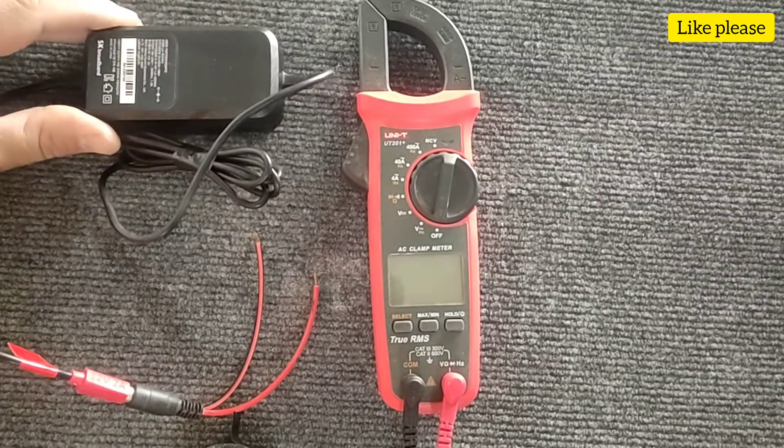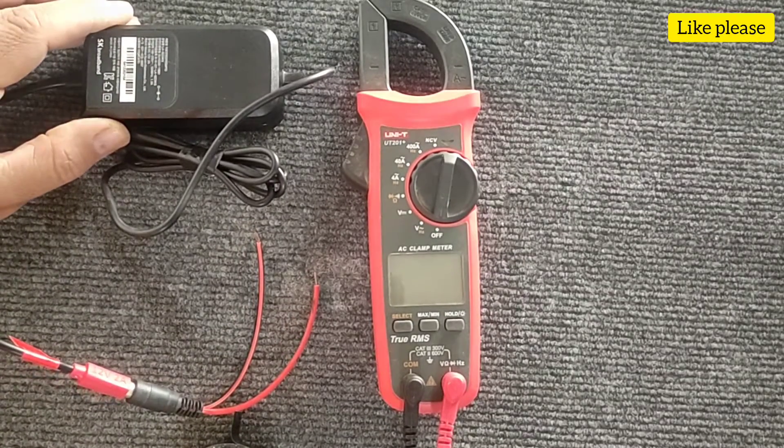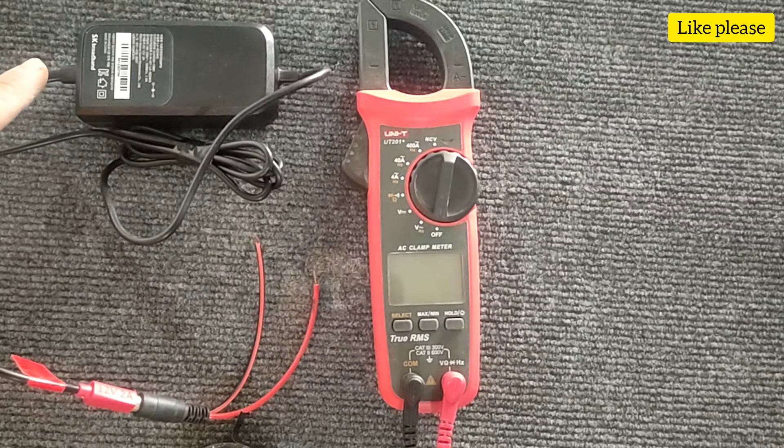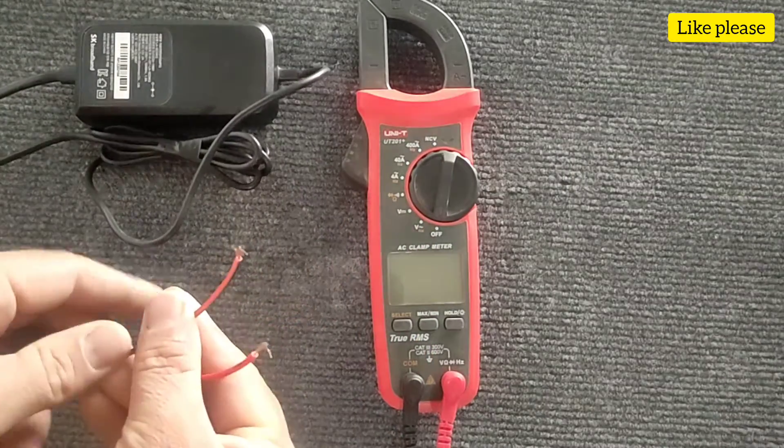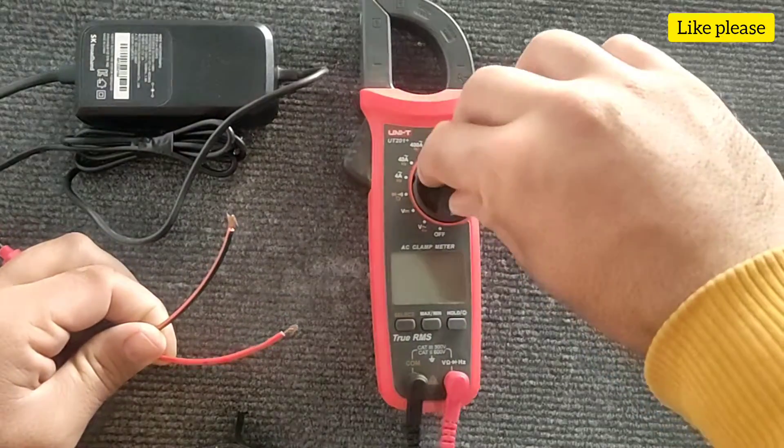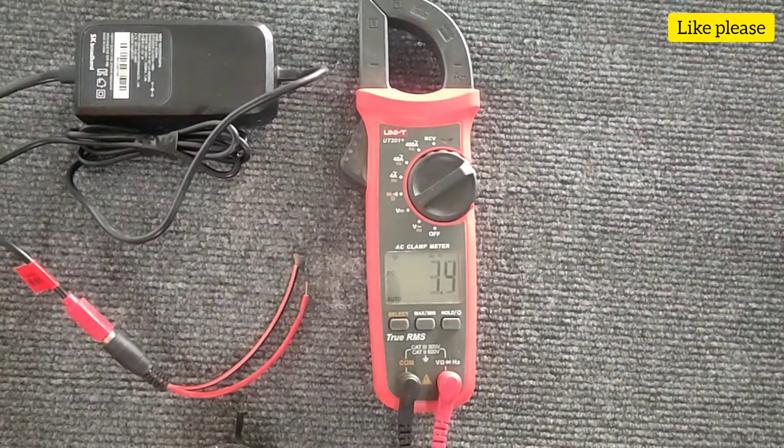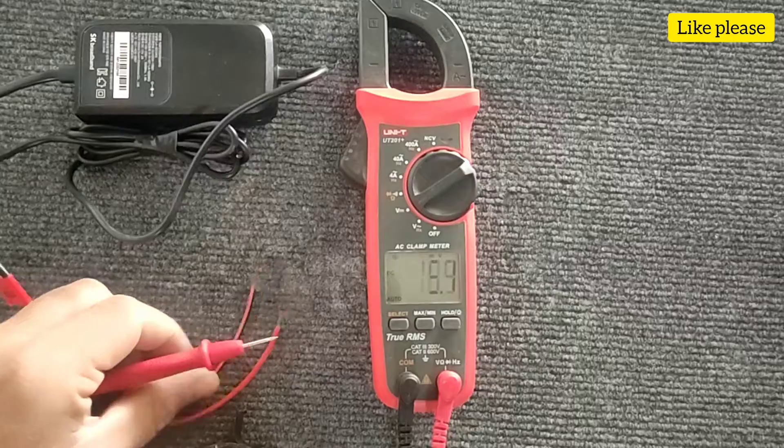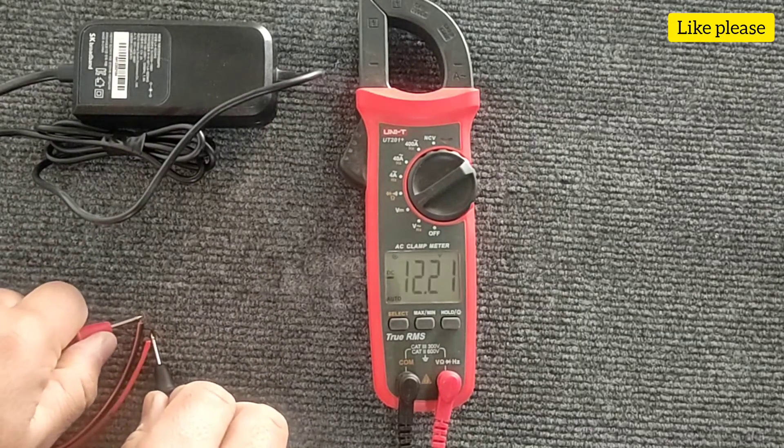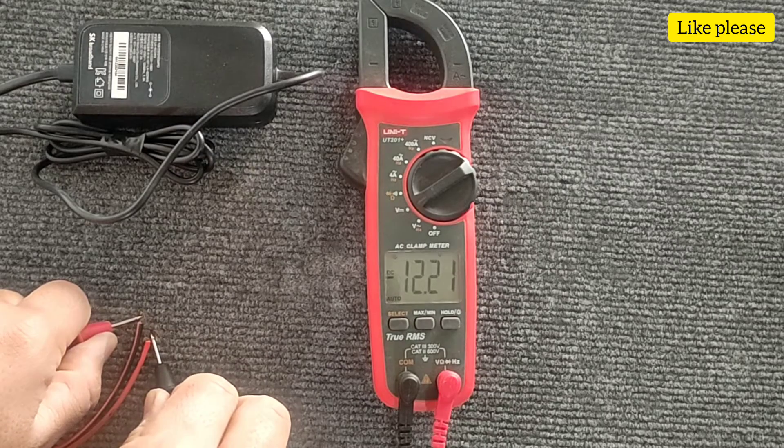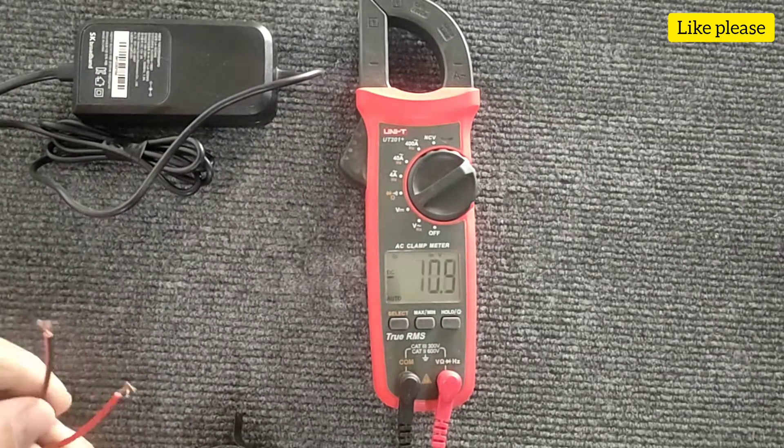Hello friends, welcome to another tutorial video. Here is a 12 volt DC adapter and we want to see which head is positive and which head is negative. First we set the multimeter to DC voltage mode and measure the potential difference between the two wires. The potential difference is 12 volts but we don't know which is negative and which is positive.